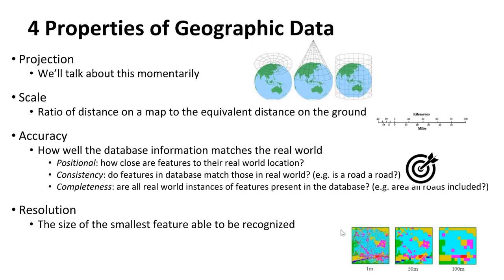The accuracy - this is how well the database information matches the real world. You have accuracy on the position: how close are features to their real world location? Consistency: do these features in the database match those in the real world? For instance, is this road a road? Is that tree actually a tree? Things that we can go out and double check in real life. And then completeness: are all real world instances of features present in the data set? Are all roads accounted for? Are all trees accounted for? If not, what's the completeness of our data set? This all feeds into how accurate our data are.